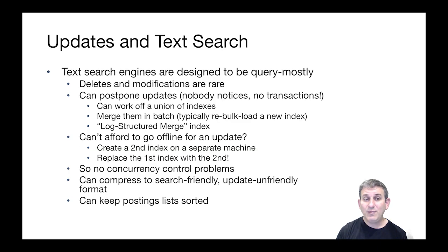As we said, we're keeping our postings lists at the bottom of these B-trees sorted. That is not something we'd want to do in an index where we're doing dynamic updates. So these are query-mostly indexes where we don't update the leaves much, and therefore it's not too expensive to have those postings lists sorted. It happens when we bulk-load the index.